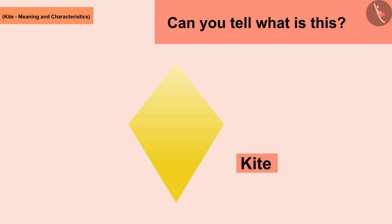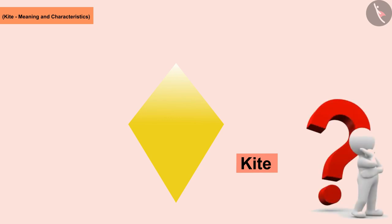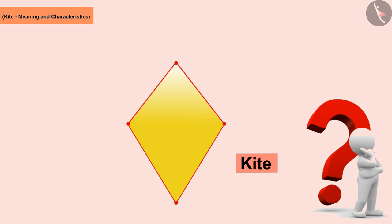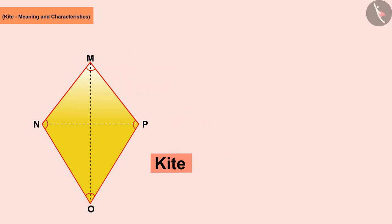A kite is a special type of quadrilateral. Kites are easier to understand than mere sightings but a little difficult to define in precise mathematical terms. Because it is also a quadrilateral, it has four vertices, four sides, four angles, as well as two diagonals. Let's name these vertices M, N, O, and P.